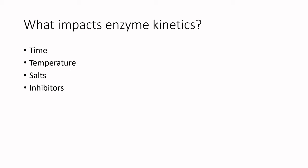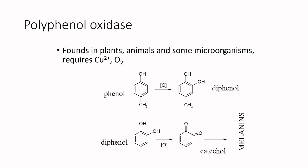What impacts all those enzyme kinetics? Time, temperature, salts, and inhibitors — and most food systems are full of all of those, which is why focusing just on enzyme kinetics doesn't make as much sense as focusing on outcomes: what are the products of these enzymes, and how do we measure the functionality and desirability of that product for the consumer?